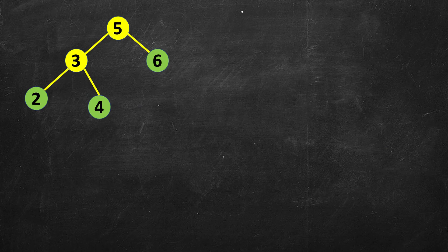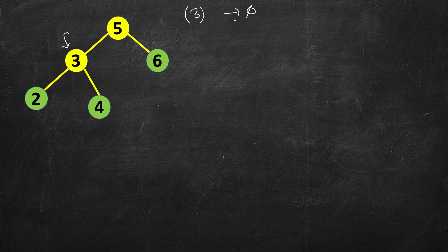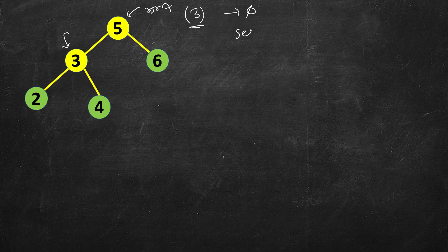Let's see both approaches. First we will look at the recursive approach, then the iterative approach. Let's say we want to search for the value 3 — this value may or may not be present in the tree. If it's present, return a pointer to that node; if it's not present, return null. You are given the root of the tree and a value to search for.